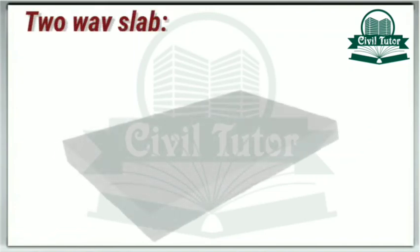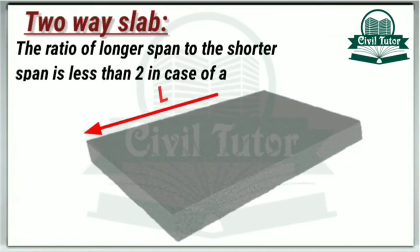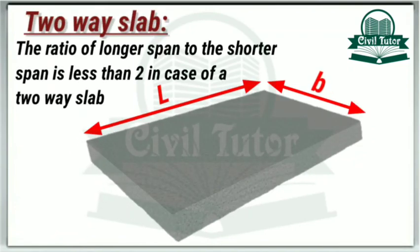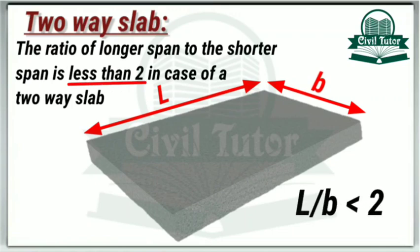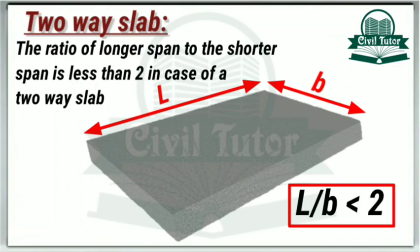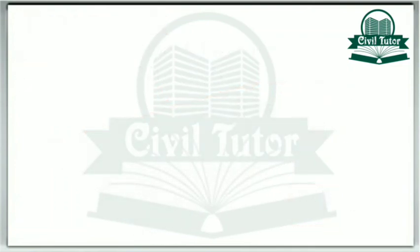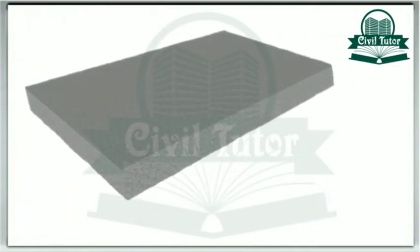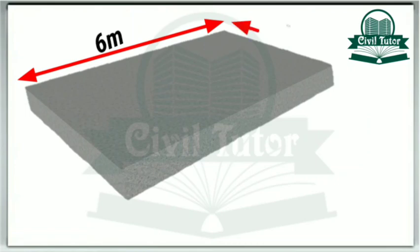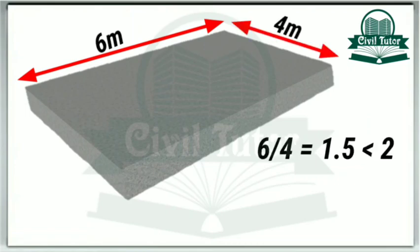In case of a two-way slab, the ratio of longer span to the shorter span is always less than 2. That is, the ratio of length to the breadth of a slab is less than 2. For illustration, consider a slab with length 6 meters and breadth 4 meters. The ratio of length to breadth will be equal to 6 by 4, equal to 1.5, which is less than 2. Hence it clearly indicates that the slab with assumed dimensions is a two-way slab.